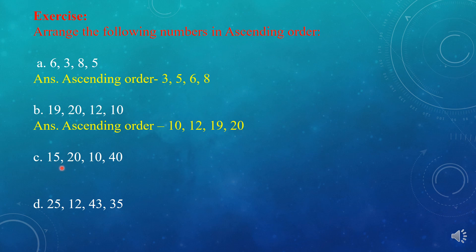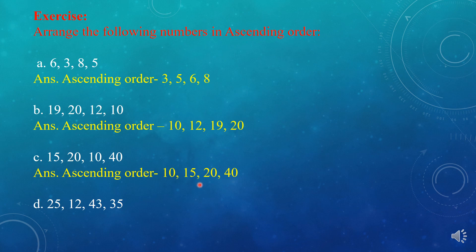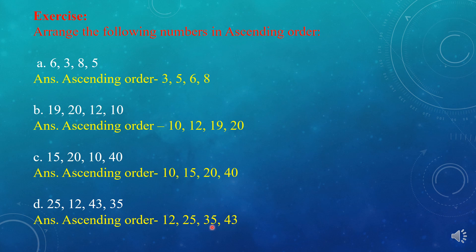Next, C is: 15, 20, 10, 40. The ascending order: 10 is the smallest, so we write 10 first, then 15, then 20, and the biggest one is 40. The last question D is: 25, 12, 43, 35. Ascending order: 12 is the smallest, then 25, then 35, then 43. More than 12 is 25, more than 25 is 35, more than 35 is 43.